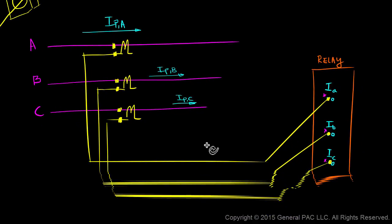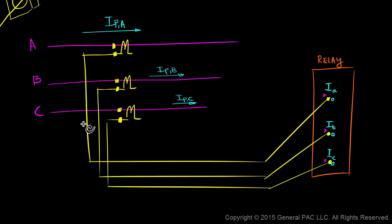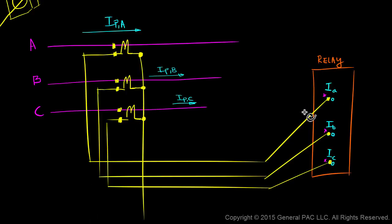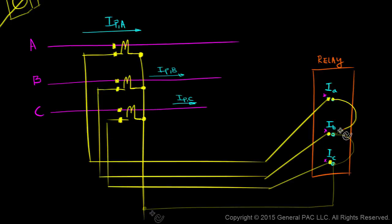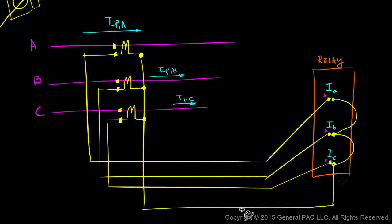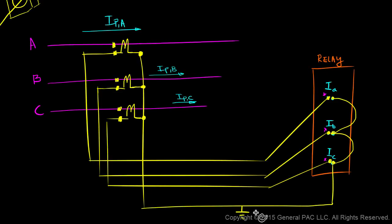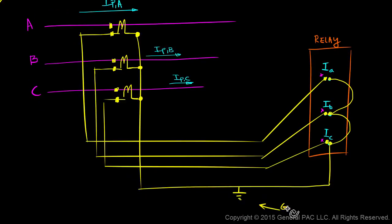Since our goal is to connect these three CTs in Y, we have to take the non-polarity side of phase A, phase B, and phase C CTs and connect them together. The non-polarity side of the input terminals of our relay must also be connected together, and one of these points must be grounded. We'll talk about this ground point more in-depth in a different module.